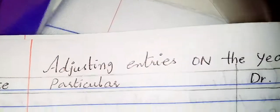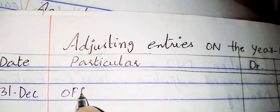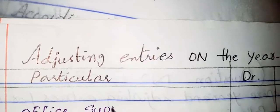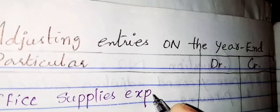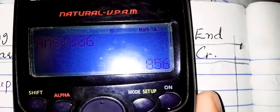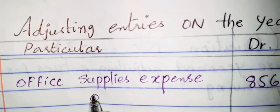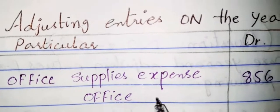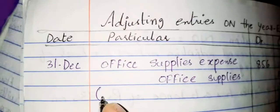In adjusting entries, we will add the date — 31 December — and write office supplies expense on the debit side. The debit amount we have calculated is 856. We will credit office supplies with 856 as well. Then we will add a narration: 'to record office supplies expense.'